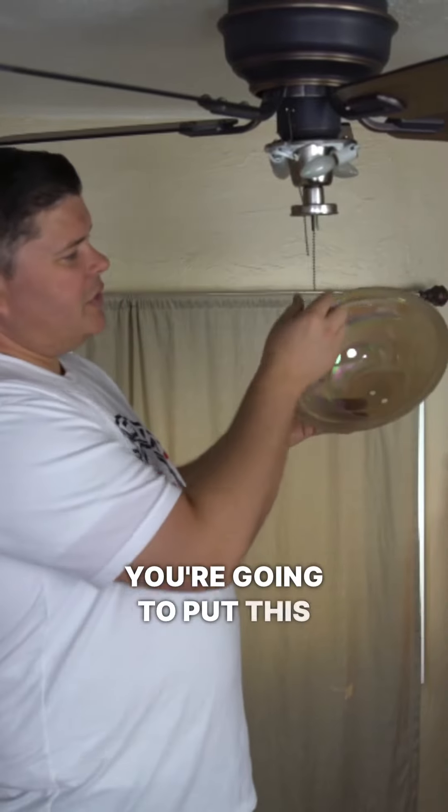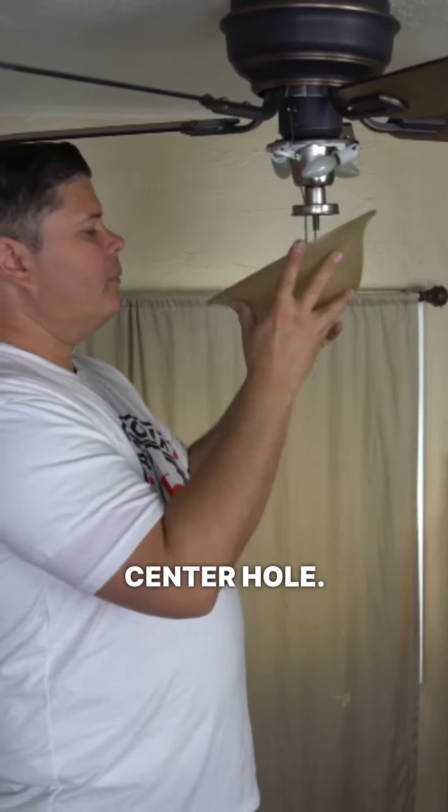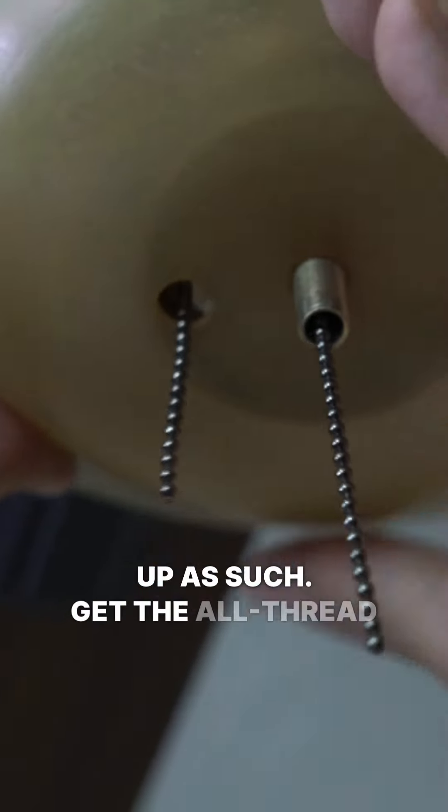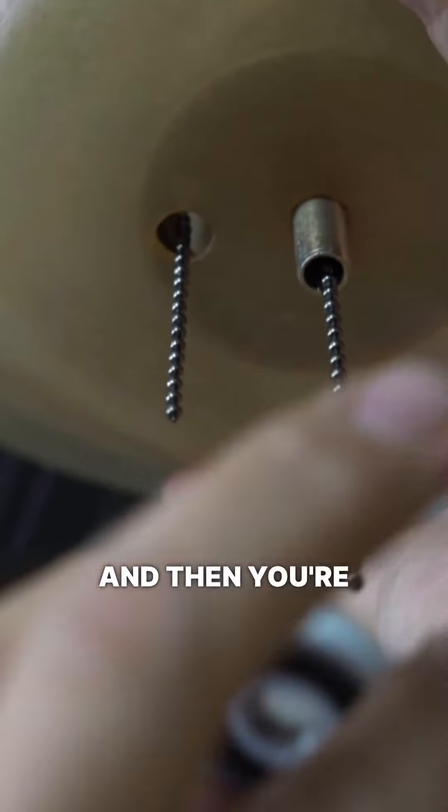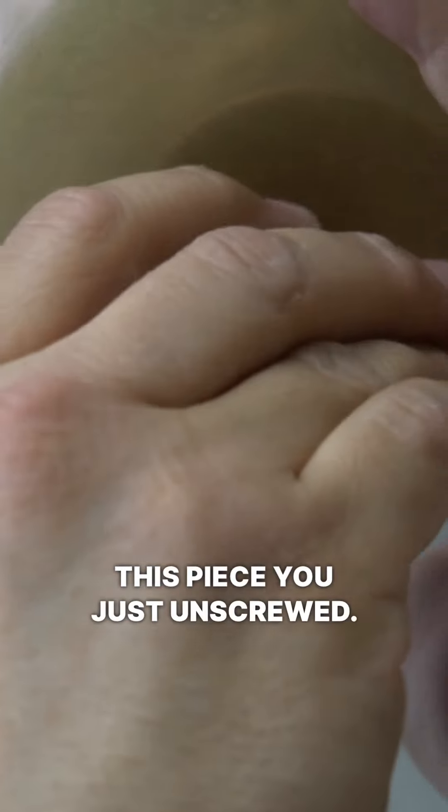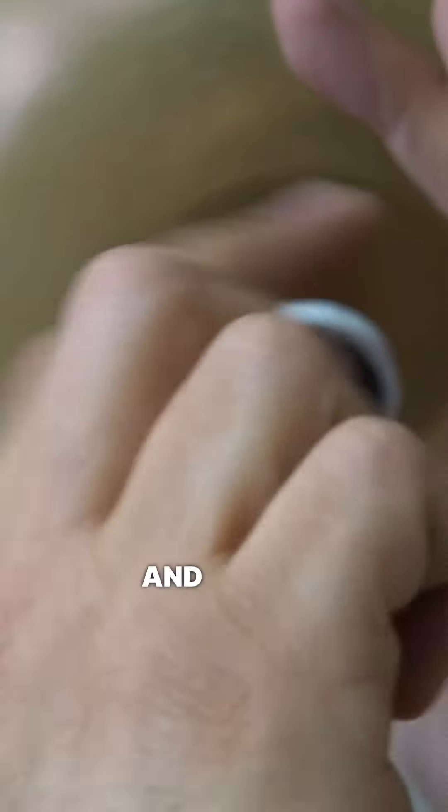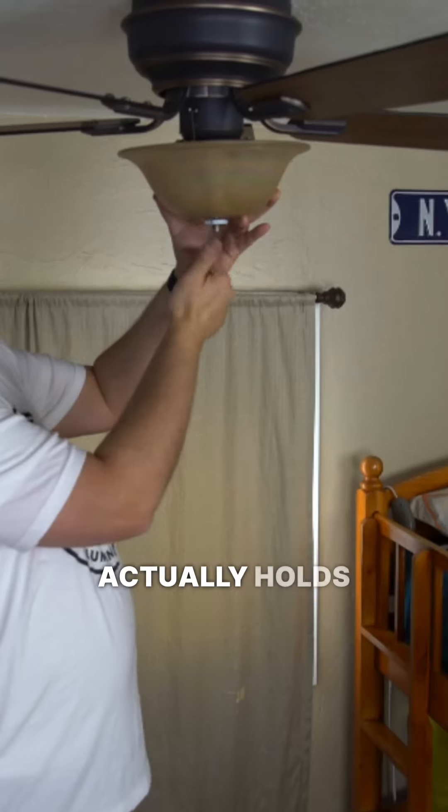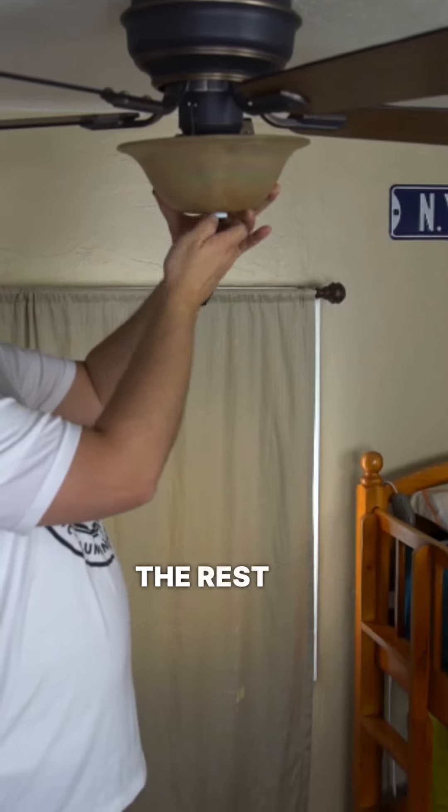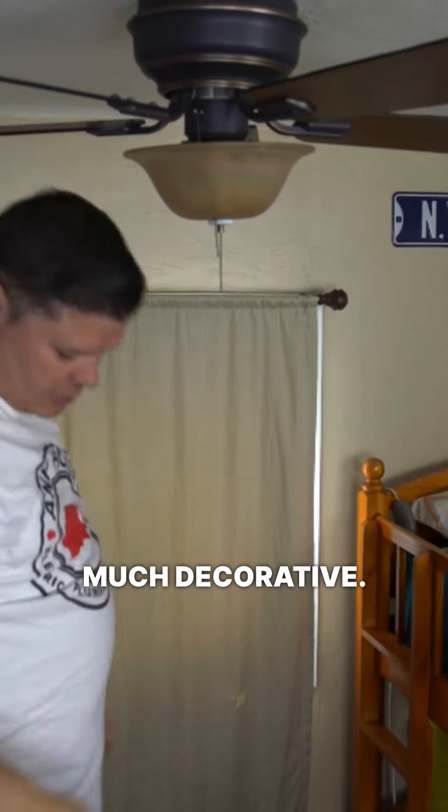You're going to put this center chain through the center hole. Line things up as such. Get the all thread to go down through there. Then you're going to take this piece that you just unscrewed, fish it through the center piece. And this is the one that actually holds the glass up. The rest of it's pretty much decorative.